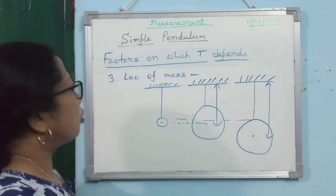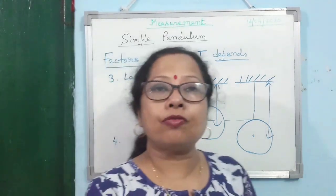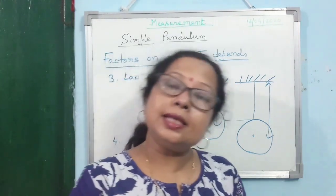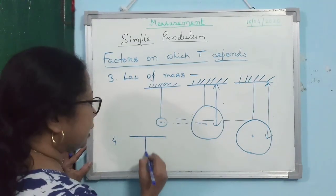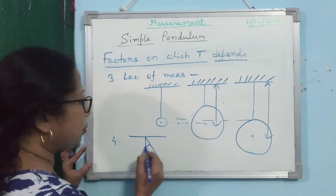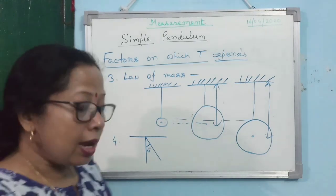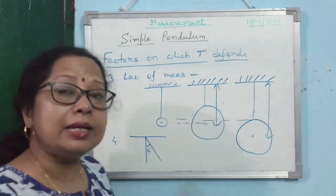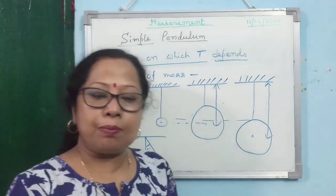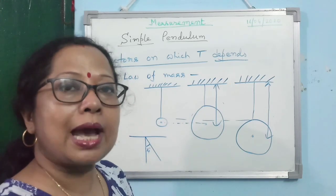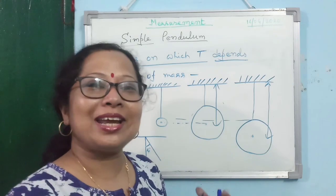The fourth factor is that time period does not depend on the amplitude of oscillation. However, there is a restriction: the angular amplitude must be less than 4 degrees. Only then does this hold true. If the amplitude is large, the motion will not remain linear. So in general, we say time period does not depend on amplitude, provided the amplitude remains very small.